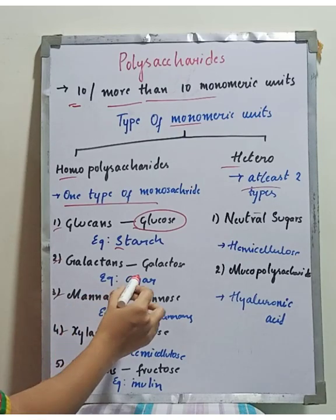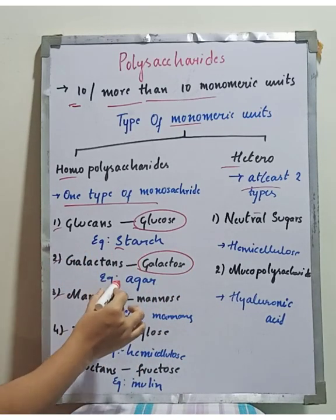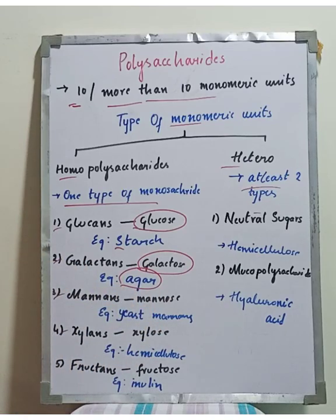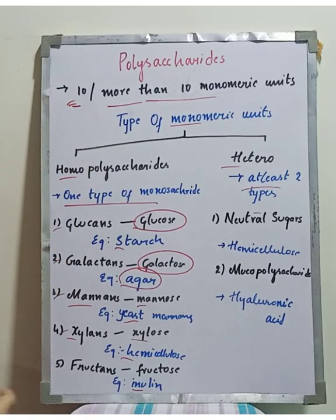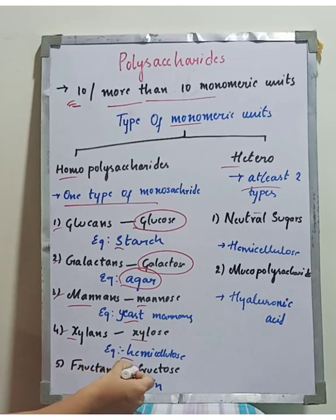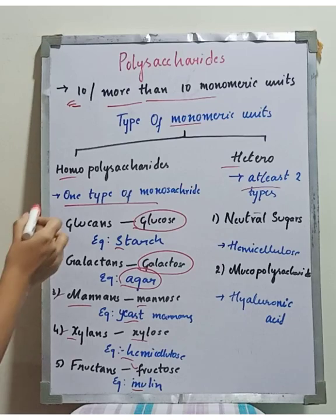Galactans yield galactose molecules on hydrolysis, with agar as an example. Mannans yield mannose sugars. Xylans yield xylose, for example hemicellulose. Fructans yield fructose; inulin yields 10 or more fructose units on hydrolysis. This completes the homopolysaccharide classification.